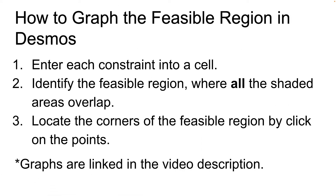Here are the steps on how to graph the feasible region in Desmos. I'll go over these steps and then use an example to show you how to locate the feasible region. First, enter each constraint into a cell on the left side. Then identify the feasible region — where all shaded areas overlap. Then locate the corners by clicking on each point. All graphs in this video are linked in the description below.